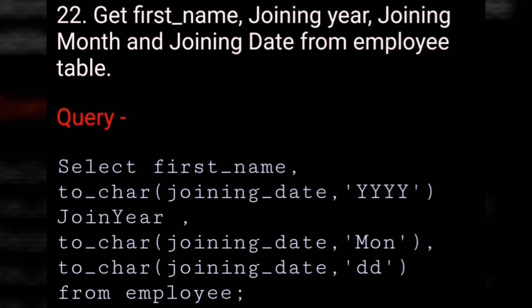Get first name, joining year, joining month, and joining date from the employee table. SELECT first_name, TO_CHAR(joining_date, 'YYYY') AS joining_year, TO_CHAR(joining_date, 'MON'), TO_CHAR(joining_date, 'DD') FROM employee.